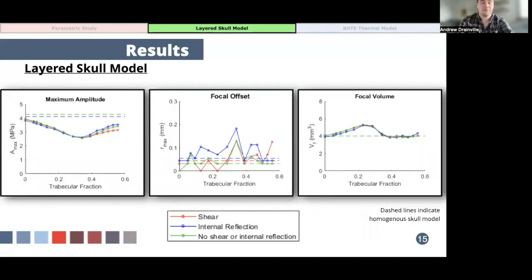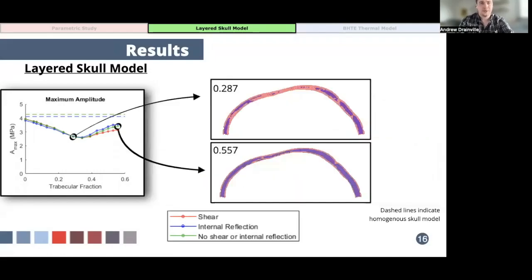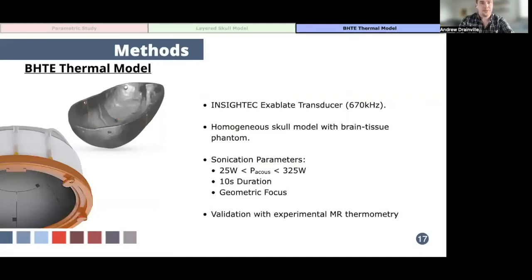So here we can see how maximum amplitude, focal offset, and focal volume change as a function of trabecular fraction. Results from simulations that include shear waves are shown in red, those that include internal reflections are shown in blue, and results from simulations that don't include either shear waves or internal reflection are shown in green. So for both maximum amplitude and the focal volume we see a gradual decrease in focal quality as the degree of heterogeneity increases, but this actually reverses around a trabecular fraction volume of about 0.3. Now if we look at skull models for two different values of trabecular fraction, we believe that the decrease in maximum amplitude and the increase in focal volume is not entirely due to just the likelihood of any individual ray meeting and being scattered from the boundaries between the cortical and trabecular layers, but due to the presence of more irregular boundaries that give rise to non-specular diffusion.